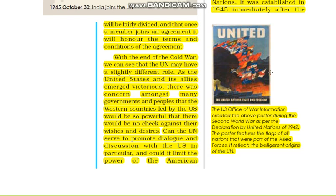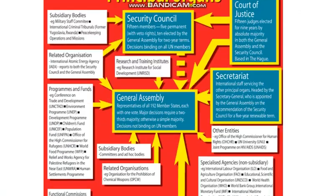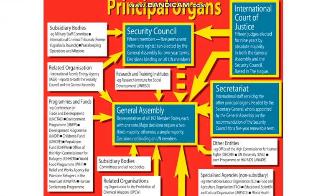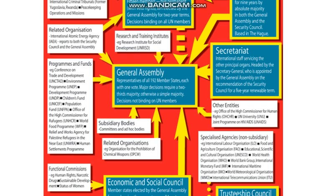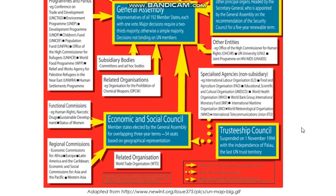The UN's origin actually came out of the war — it was born during the World War. The main organs are: Security Council, General Assembly, Secretariat, International Court of Justice, Economic and Social Council, and Trusteeship Council — which was suspended and ended in 1994.